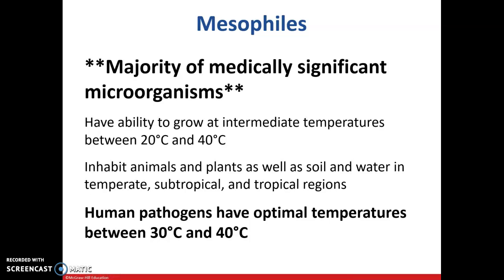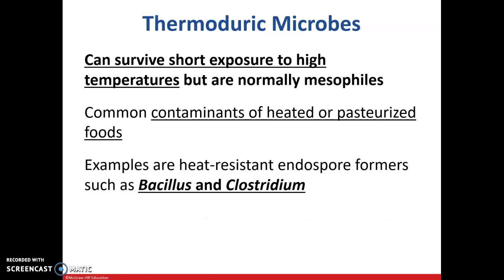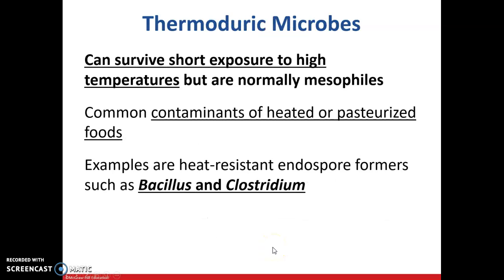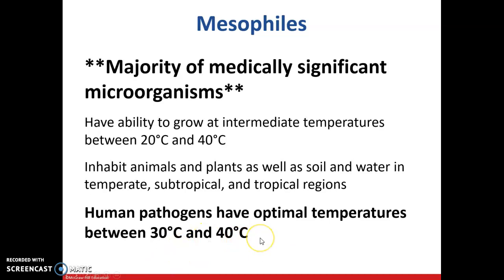Mesophiles represent the majority of medically significant microorganisms — you should know that. These grow between 20 and 40 degrees Celsius and inhabit animals, plants, soil, and water. Human pathogens — the ones that make people sick — have an optimal temperature between 30 and 40 degrees Celsius, which is relatively close to body temperature of 37 degrees Celsius.